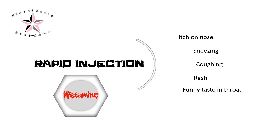Another side effect with rapid fentanyl administration is chest wall rigidity, which may pose a problem if we do not intend to use muscle relaxants, like in TIVA. One of my patients with a history of asthma even developed bronchospasm on rapid administration of fentanyl. Now for pro tip number 1.